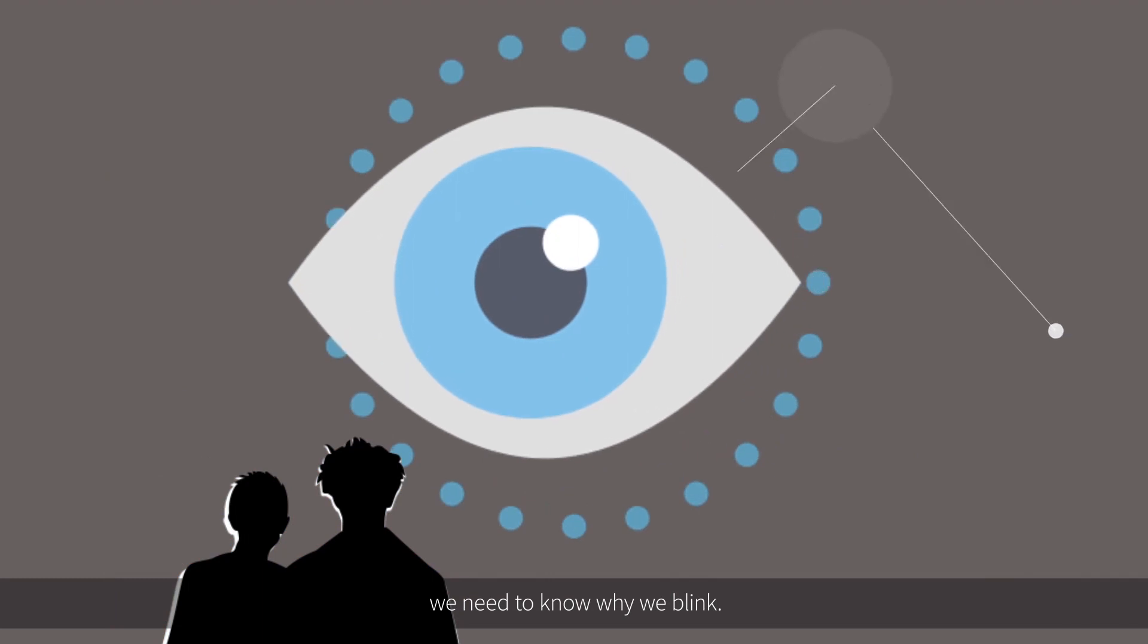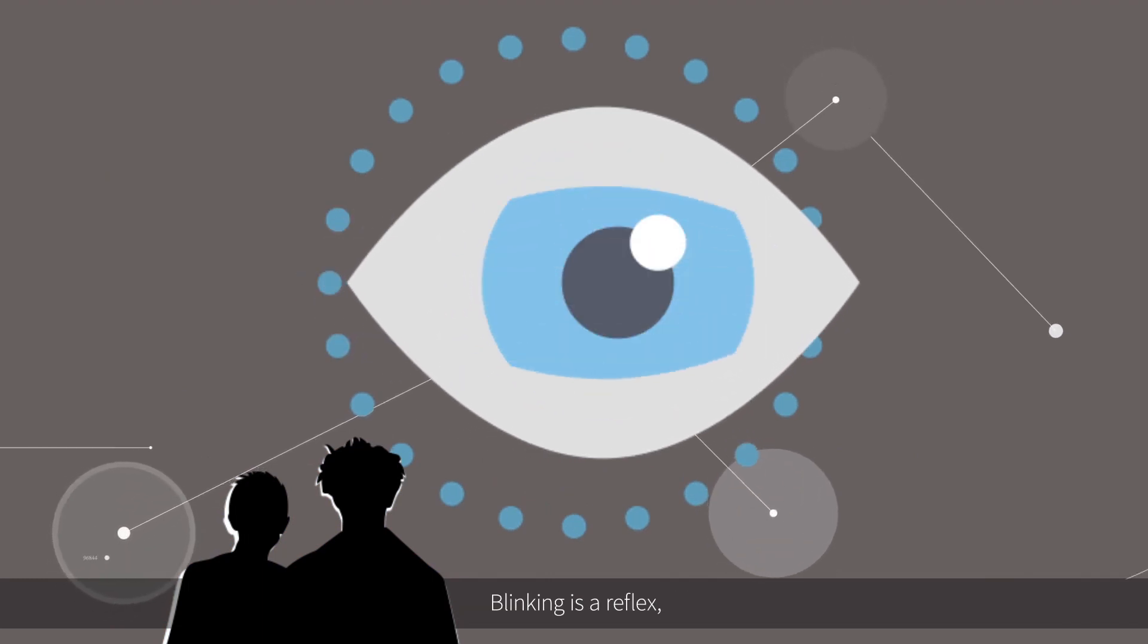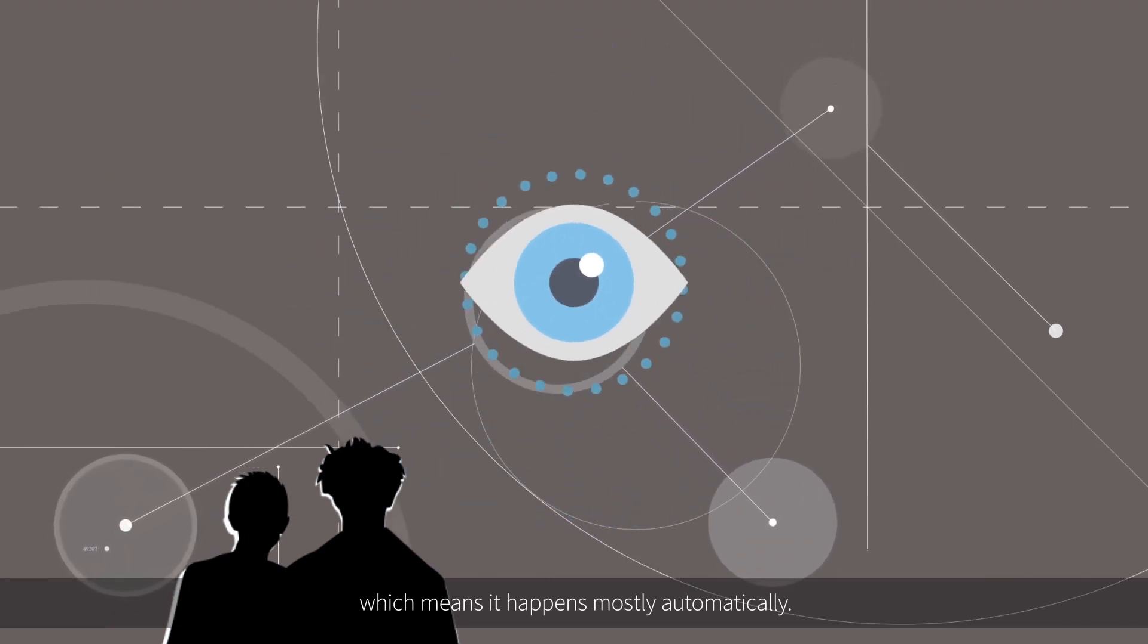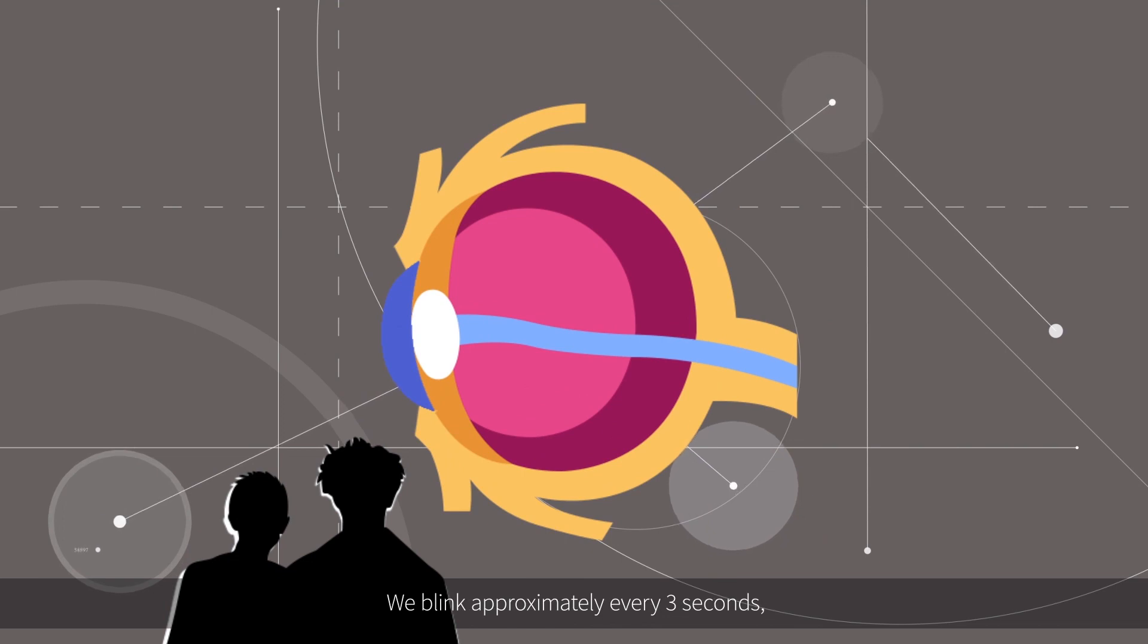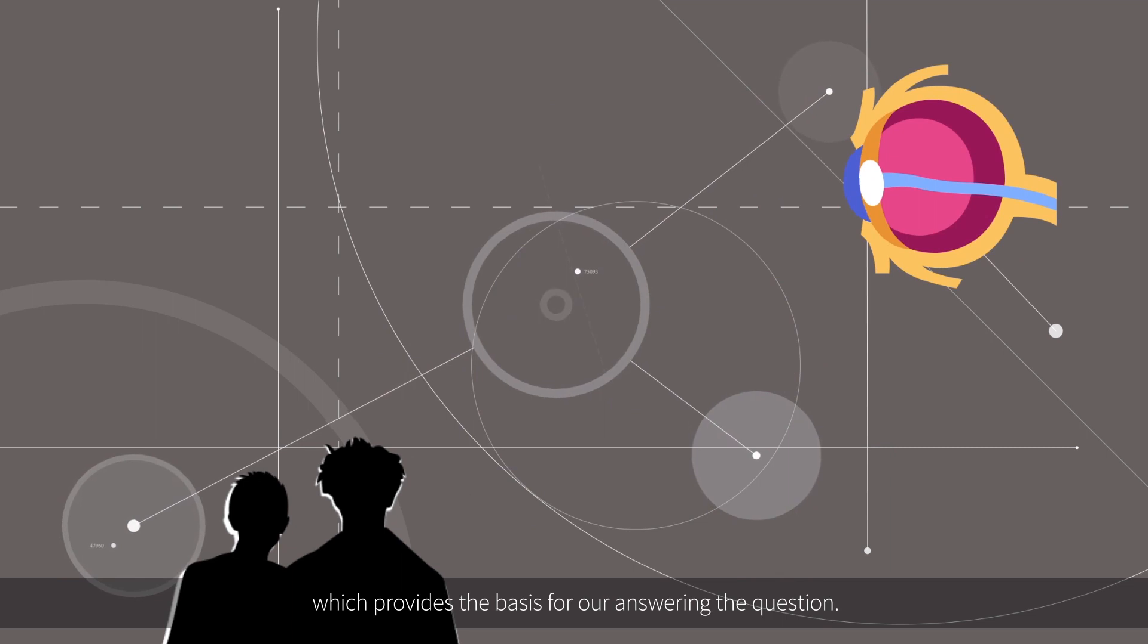First, we need to know why we blink. Blinking is a reflex which means it happens mostly automatically. Blinking protects and maintains our eyes by generating a secretion. We blink approximately every three seconds, which provides the basis for answering the question.